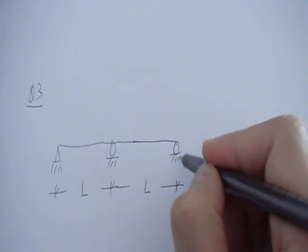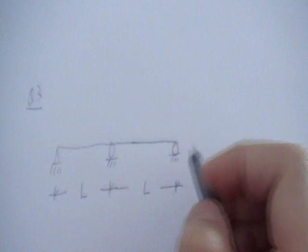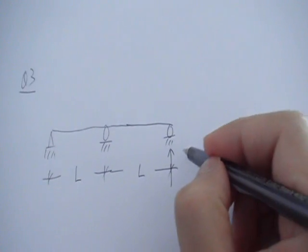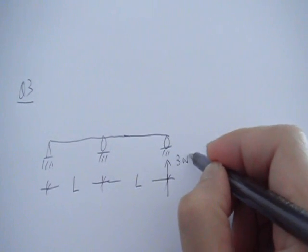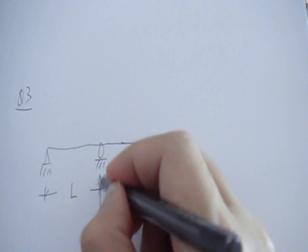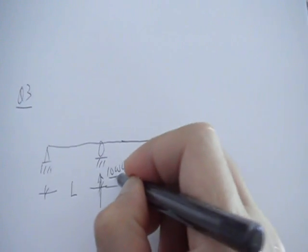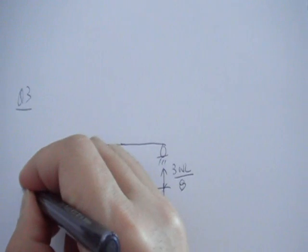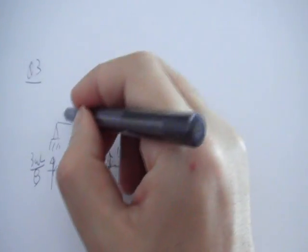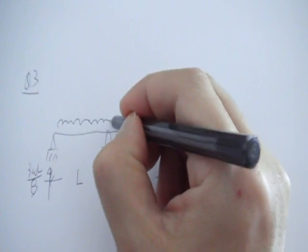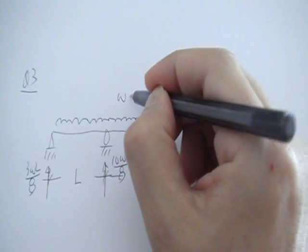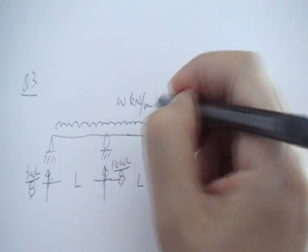And in the question actually the reaction forces at 3 supports are given, so you don't need to carry out step number 1 actually. So this is given as 3WL over 8, this is 10WL over 8, and that's 3WL over 8. And then there is a uniformly distributed load on the top, which is W kN for a meter length.